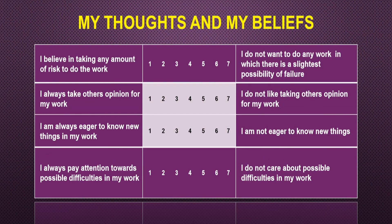These are the eight statements; the first four are on the screen. The very first statement has a left hand side and a right hand side — both are absolutely opposite. The left hand side says: I believe in taking any amount of risk to do the work, meaning my risk taking capacity is 100 percent. The right hand side says: I do not want to do any work in which there is the slightest possibility of failure, meaning my risk taking capacity is almost 0. There is a seven point scale, 1 to 7. If a person thinks he has 100 percent risk taking capacity, he marks number 1. If a person thinks he has 0 risk taking capacity, he marks number 7. If you think that in 80 percent of cases you can take a risk and 20 percent you cannot, you mark at number 2. Similarly, number 3 means 60 percent in the left hand statement and 40 percent in the right hand statement.